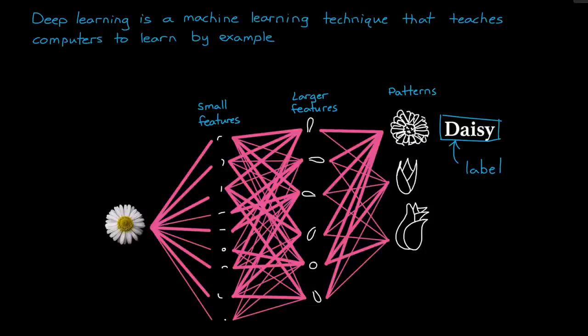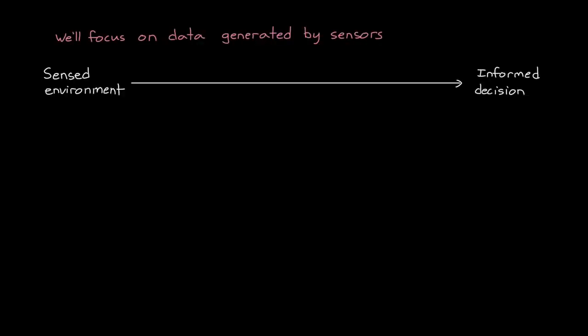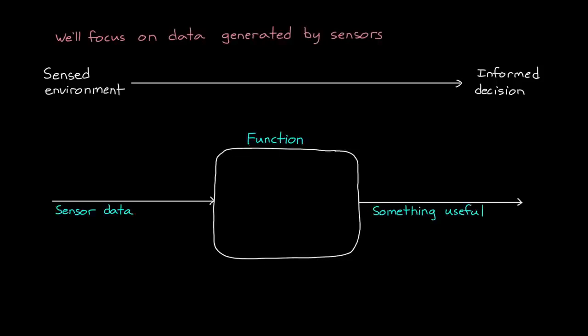So, with that in mind, let's start by getting a better understanding of what a feature is in the first place. And we'll use sensor data as an example. Engineers use sensors to measure the environment, and we want to use the measured data to perform some future action. We want to make some informed decision based on what the sensors observe. Therefore, we often need a function or algorithm that takes in sensor data and returns something useful.